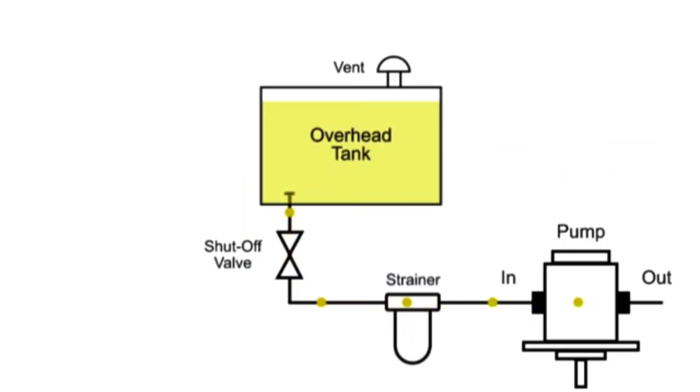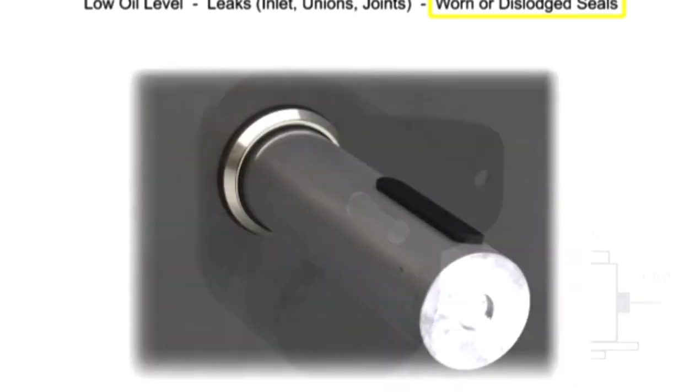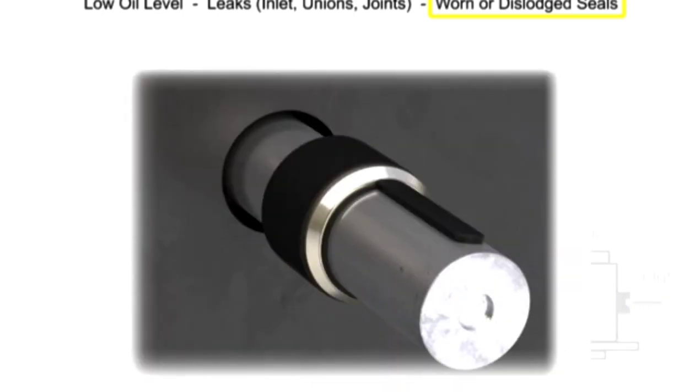Another form of cavitation is called aeration and is caused by air entering the oil stream. This can occur for a variety of reasons, including a low oil level in the reservoir, leaks in the inlet plumbing line, especially at unions and joints, and worn or dislodged seals in other hydraulic components such as pumps, cylinders, or valves.